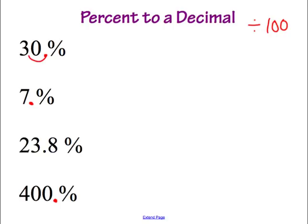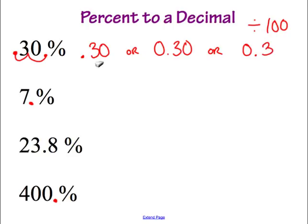We're going to divide by 100 on each problem and move our decimal two places to the left. Going 1, 2 — that leaves us with 0.30 for 30%. This can also be written as 0.30 or just 0.3 — any of those are acceptable answers.